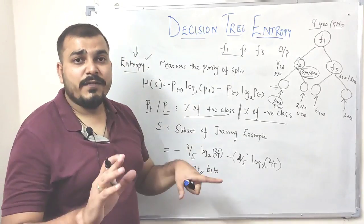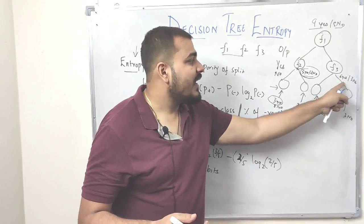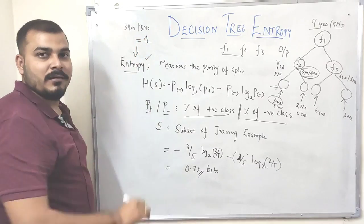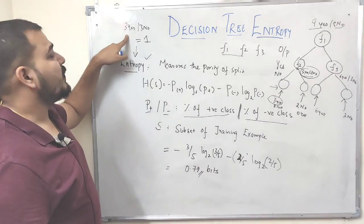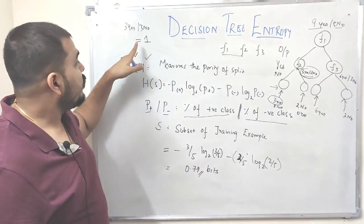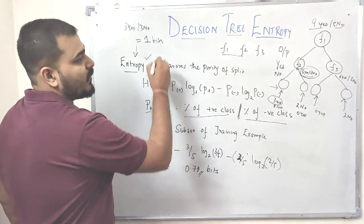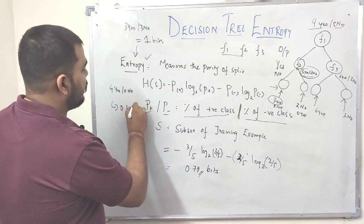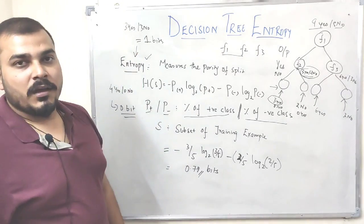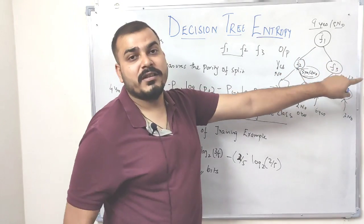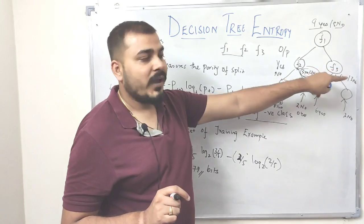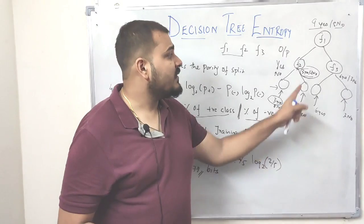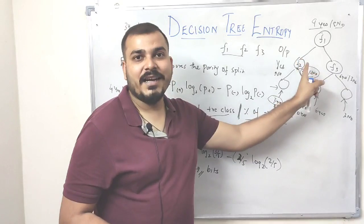Always remember: for a completely pure split, such as 4 yes and 0 no's, the entropy will be 0 bits. So entropy ranges between 0 and 1. Now, suppose I want to decide whether to select F2 or F3 first — I compute the entropy of both. If one entropy is 0.75 and another is 0.5, the lower entropy is better, so I go ahead and select the feature with entropy 0.5 and start splitting with it.